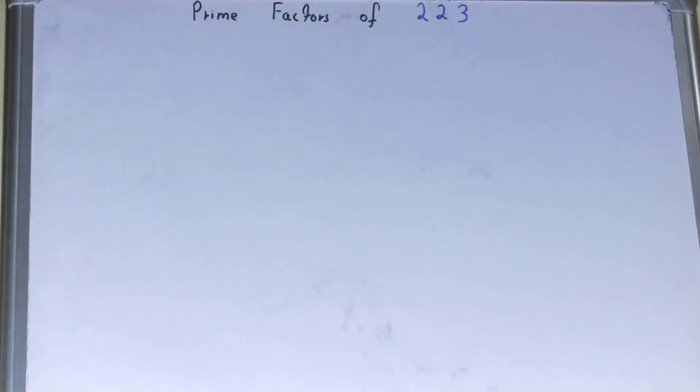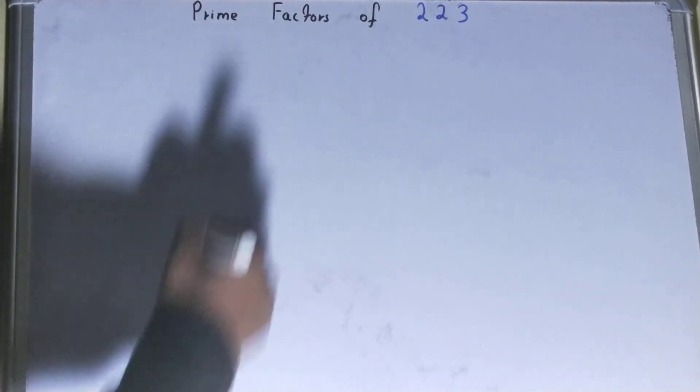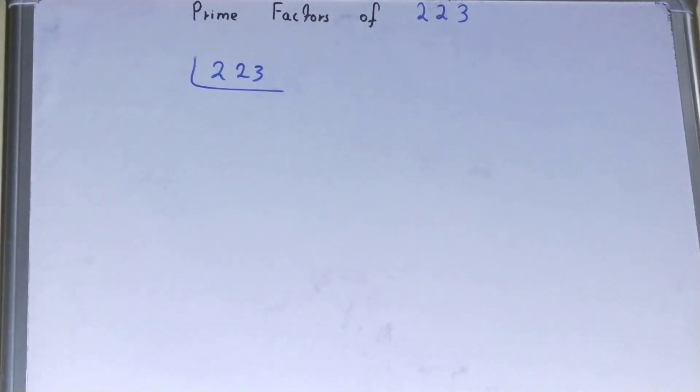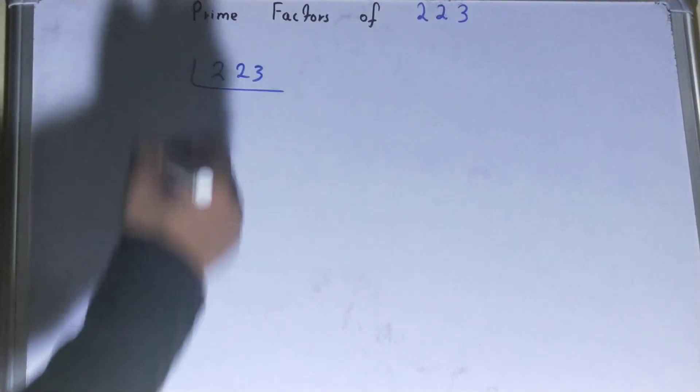that the prime factors of 223 is itself, that is 223. But still, if in an exam you want to prove it, then you can write it like this. And because 223 is a prime number, you can write it on the left hand side also. When you do so, you will get the value as 1, and once